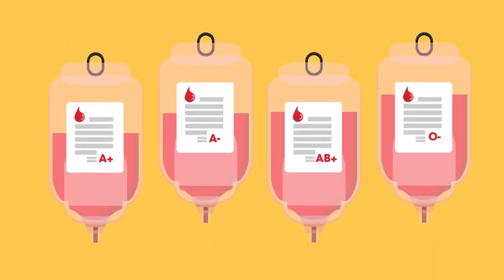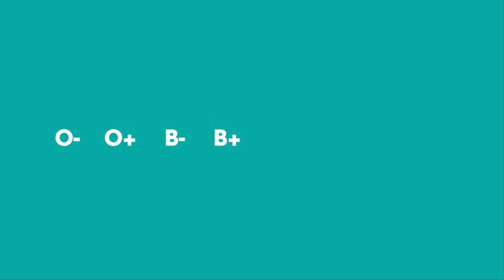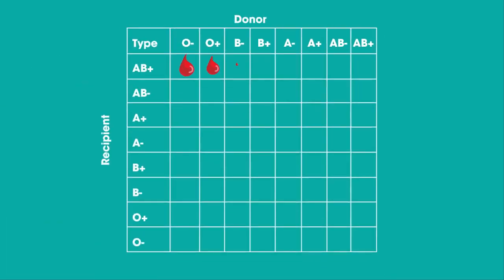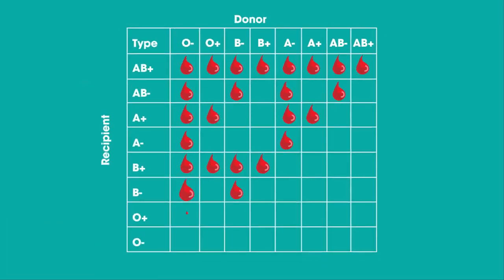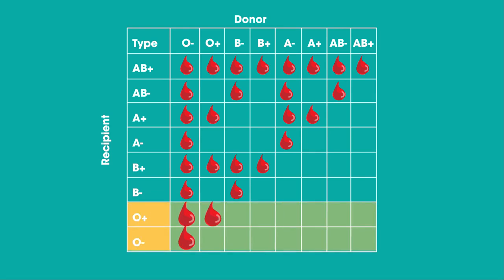Different people have different blood types or groups. You can be either O, B, A, or AB. If you're given a blood transfusion, you must have blood which is compatible with your blood type. So if you're one of the AB blood groups, you can receive blood from all or lots of donors. Whereas if you're blood type O, you can only receive blood from other O's. Or if you're O-negative, you can only receive blood from other O-negative donors.